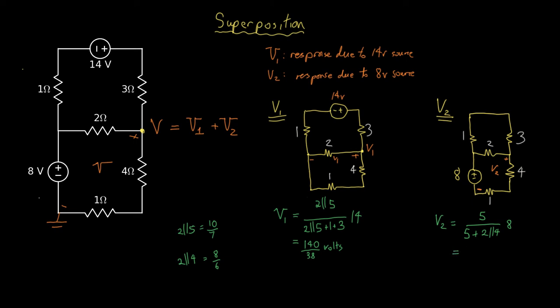we find that V2 is 240 over 38. Coming back to the original equation, V1, 140 over 38, V2 is 240 over 38, leading to 380 over 38, or 10 volts.